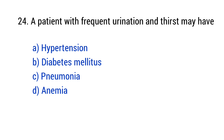Question number 24: A patient with frequent urination and thirst may have? The right answer is option B — Diabetes mellitus.